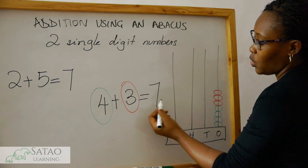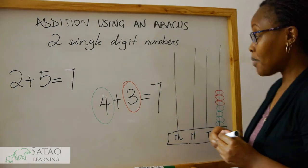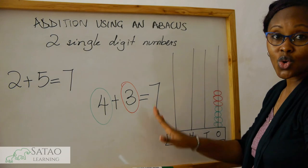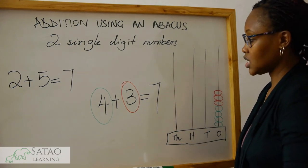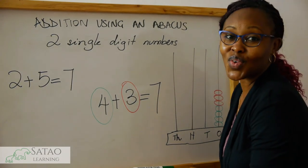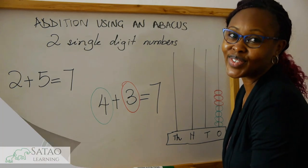So four plus three equals seven. And that's how we can use an abacus to add two single digit numbers. Thank you very much for watching and have a wonderful day.